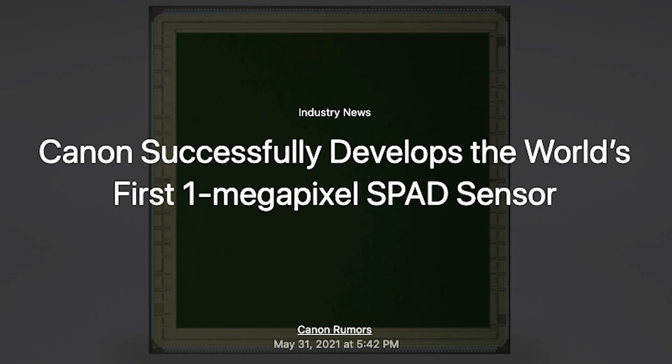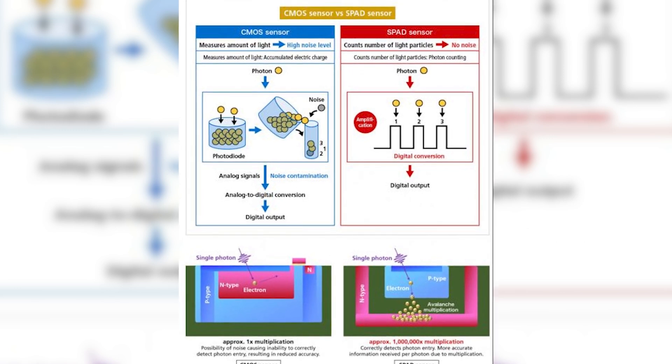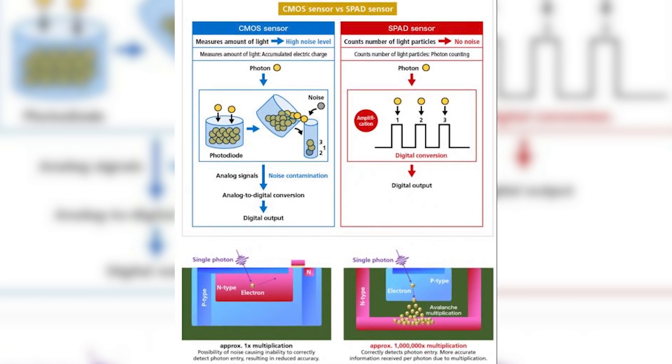Canon has successfully developed the first megapixel single photon avalanche diode image sensor, also known as a SPAD sensor. SPAD sensors are a type of image sensor. You're probably asking yourself: what's the difference between a SPAD sensor and a CMOS sensor? Well, both SPAD and CMOS sensors make use of the fact that light is made up of particles. However, with CMOS sensors, each pixel measures the amount of light that reaches the pixel within a given time, whereas SPAD sensors measure each individual light particle that reaches each pixel.